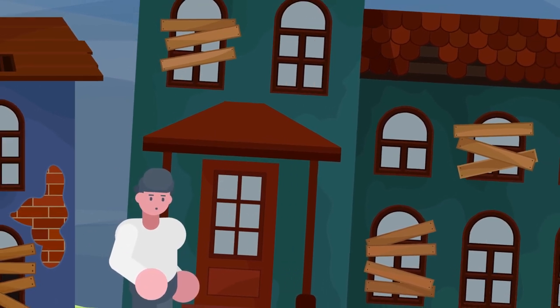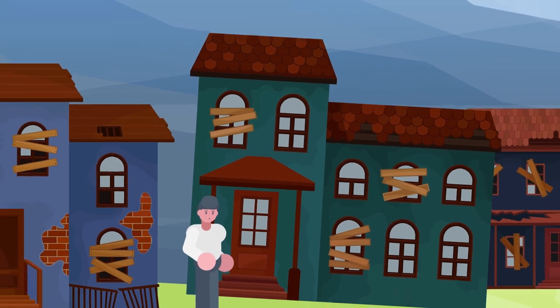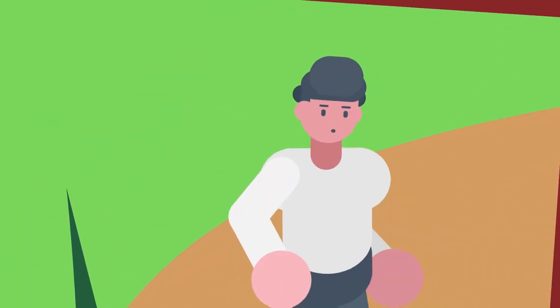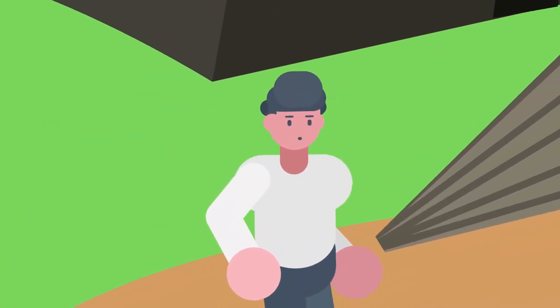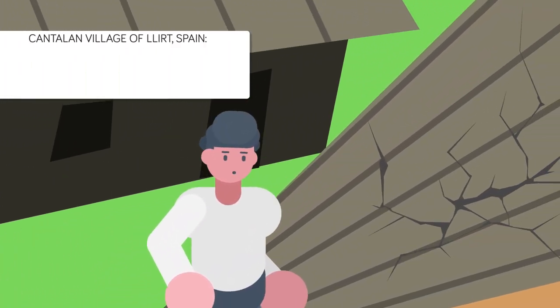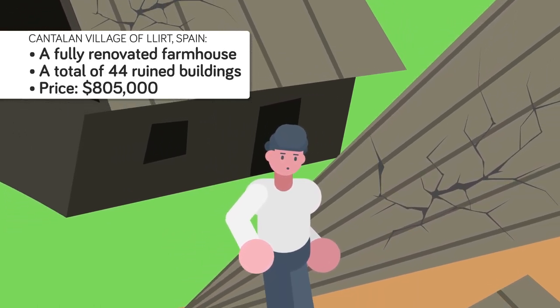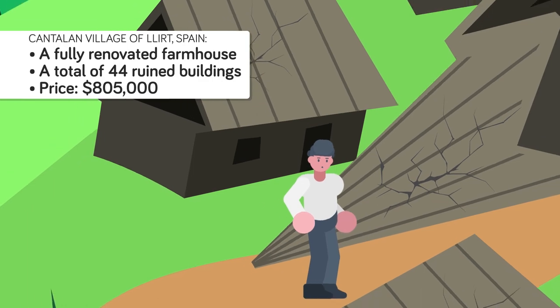For instance, the abandoned shepherd's village of Valle Piola in Italy, with a dilapidated medieval church, can be bought for only $592,000. If he wants to buy just one ghost town, he can own the entire Catalan village of Lloreth in Spain, which consists of a fully renovated farmhouse and a total of 44 ruined buildings for $805,000.